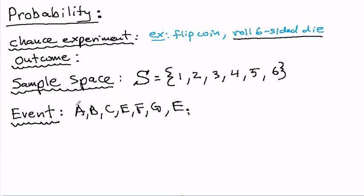So if the outcome of the chance experiment is contained in the event, then we can say that that event has occurred. In order to see this more clearly, let's do an example. So let's stick with rolling the die.